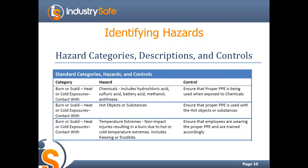This is an example of what we see some of our clients use when they do JSAs. They divide up their hazards into categories, may give a description of the type of hazard, and may also have some controls built in. That way, as you go through JSAs, you have a nice list and you're not starting from scratch in assessing the hazards and the potential controls — you have a list to work from that helps you with your JSAs.